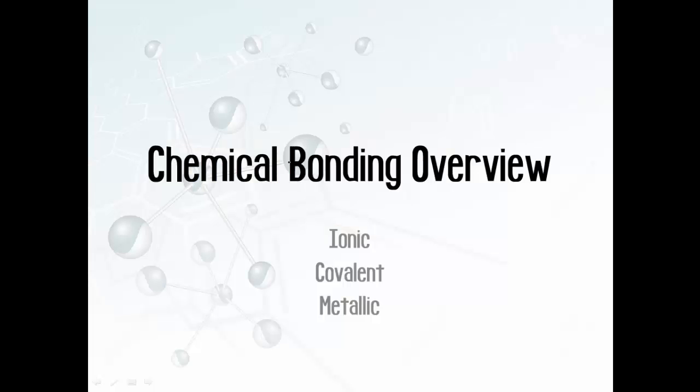Welcome to our quick overview of the different types of chemical bonding. We're going to be going over three different types: ionic, covalent, and metallic. If you're in pre-AP chemistry, these might be brand new to you. Let's get into it and see what the difference is between ionic bonding, covalent bonding, and metallic bonding.